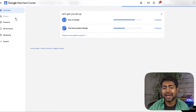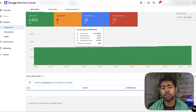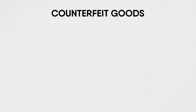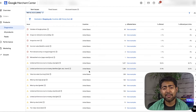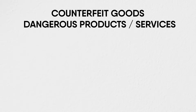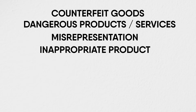Let's go over some of the basic ones. I've seen a lot of product disapprovals for counterfeit goods, disapprovals for dangerous products or services — very common based on a specific niche. One of the most common ones is misrepresentation, not only for the Merchant Center account itself but also for individual products. Inappropriate content — any kind of content related to the product which is not allowed on Google — is also a common disapproval.